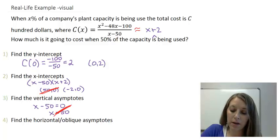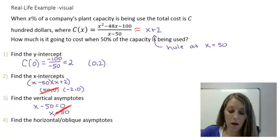And so all I have left is approximately x plus 2. Now I do approximately here because we know there is, in fact, a hole at x equals 50.